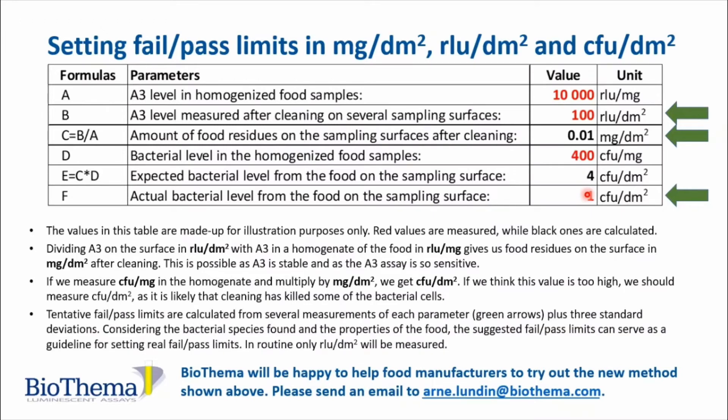Tentative fail-pass limits are calculated from several measurements of each parameter, shown by the green arrows, plus three standard deviations. Considering the bacterial species found and the properties of the food, the suggested fail-pass limits can serve as a guideline for setting real fail-pass limits. In routine operation, only RLU per square decimeter will be measured.